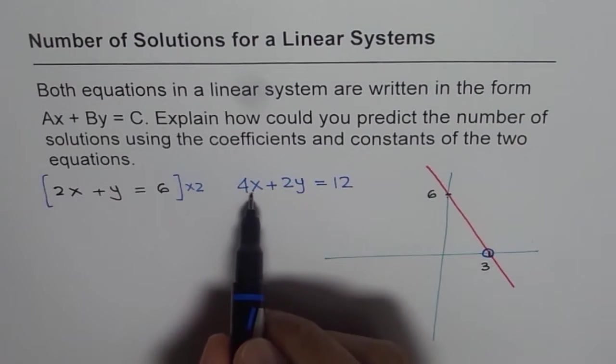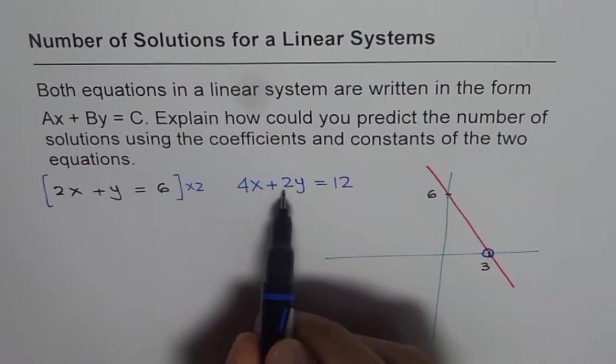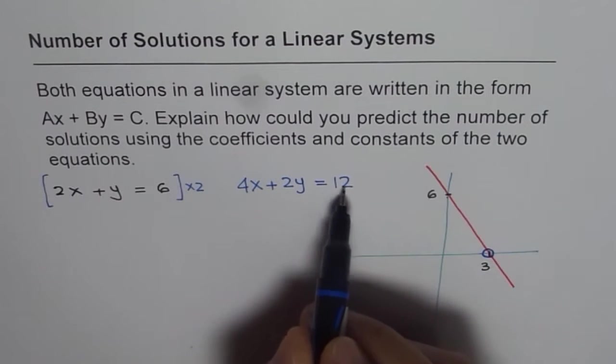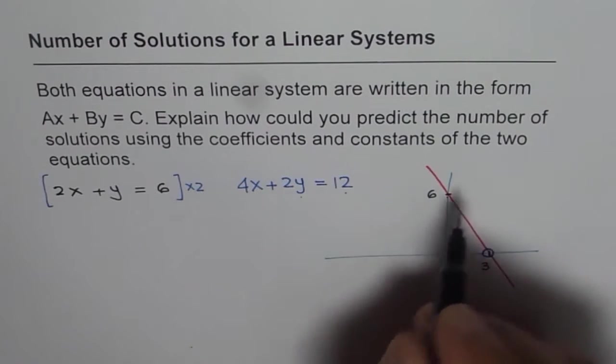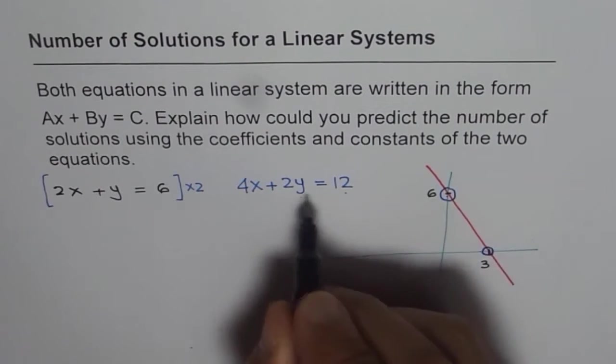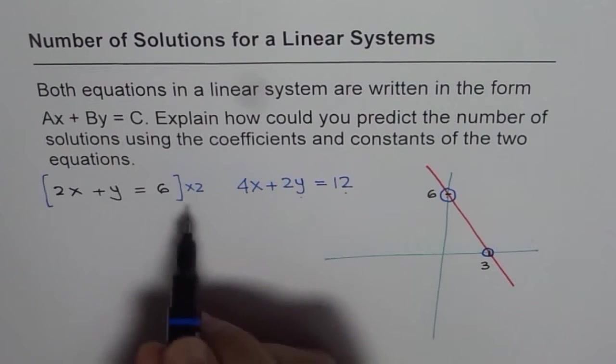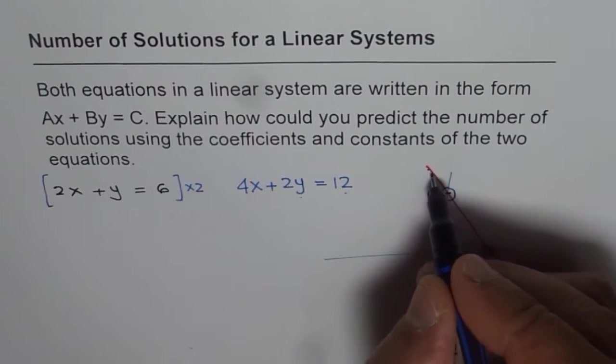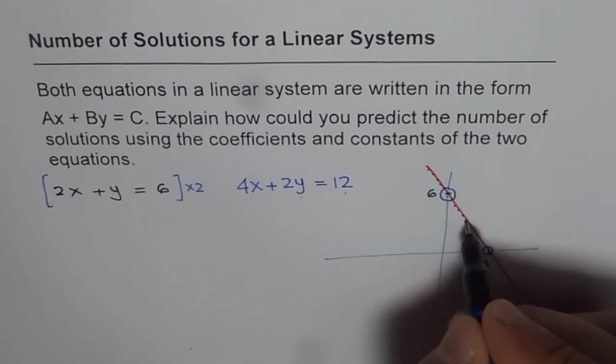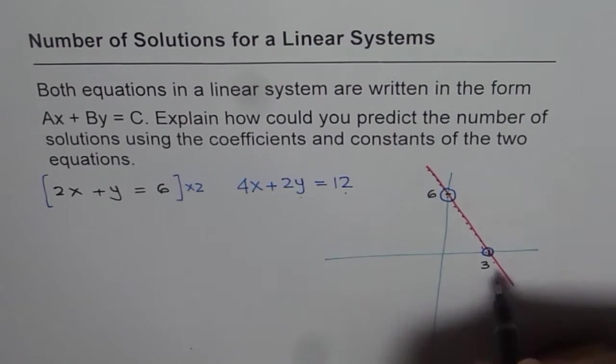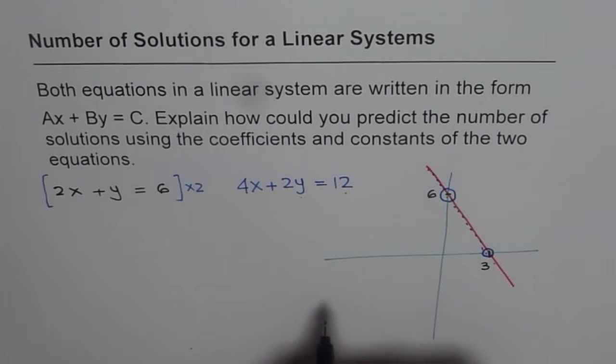Now, if I place X as 0, then we get 2Y equals to 12 or Y equals to 12 divided by 2, which is 6. So what we have is exactly the same line. Do you see? That means that blue line is exactly the same. It overlaps. Do you see that? So if it overlaps, then what happens?